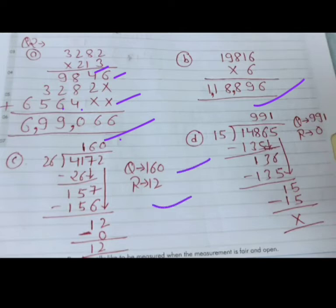In D part, hume divide karna hai 14,865 ko 15 se. So divide karenge, 15 into 14865, quotient is 991, and remainder is 0.